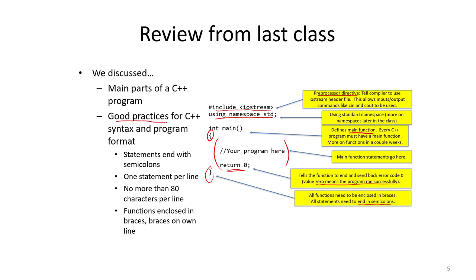We also talked about good practices and started learning good habits. All statements in C++ end with semicolons. We generally have only one statement per line and no more than 80 characters per line. We enclose functions in braces, indent within braces, and typically put braces on their own lines. Try to get used to following these conventions — in later assignments, it's often part of your grade.